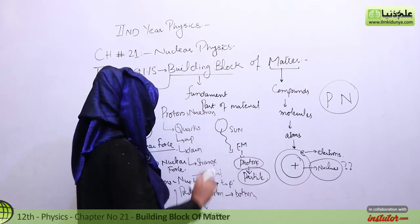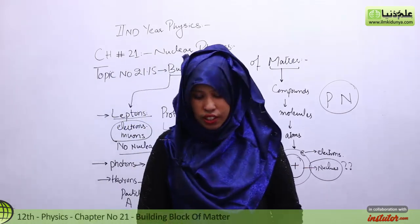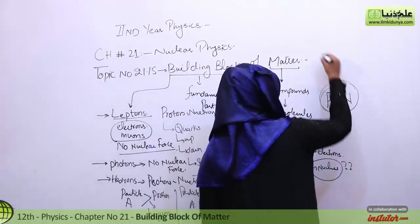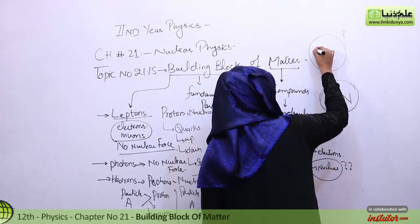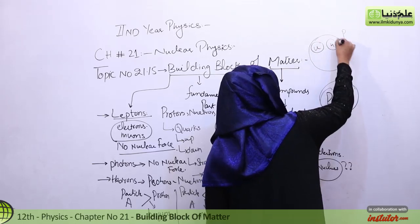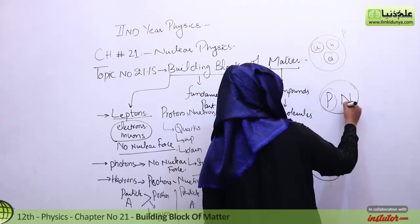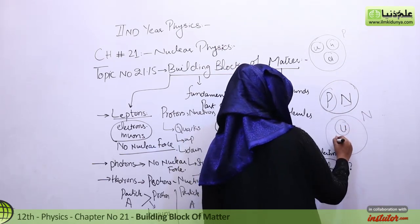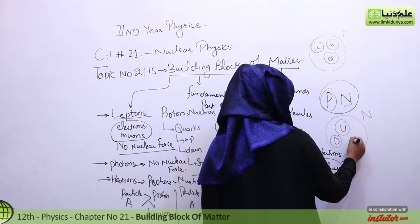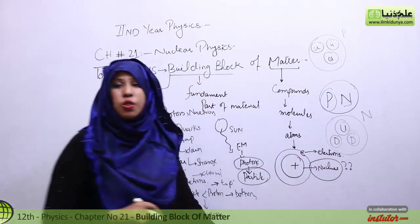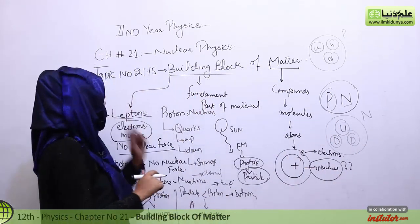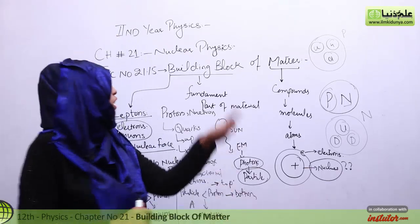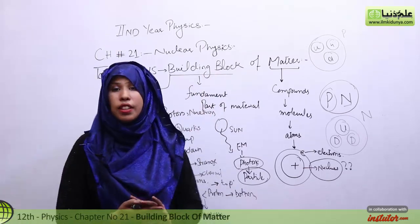These are six types of quarks. Now let's talk about a proton — a proton is made of two up quarks and one down quark. A neutron is made of one up quark and two down quarks. So basically, quarks are our building blocks. This was our topic number 21.15, the building blocks of matter.